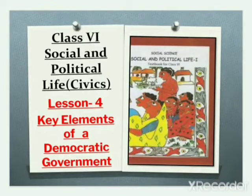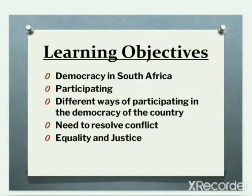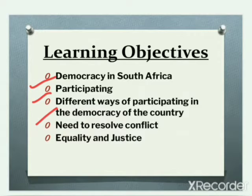Good morning students. Today we are going to start lesson number 4 of social and political life. The lesson name is key elements of a democratic government. In this chapter we will learn about democracy in South Africa, different ways of participating in the democracy of a country, and why there is a need to resolve conflict, and equality and justice.